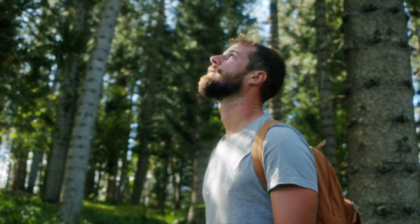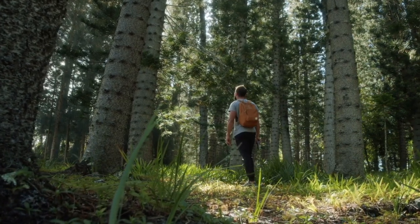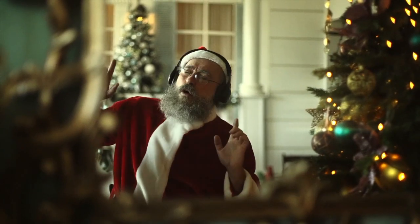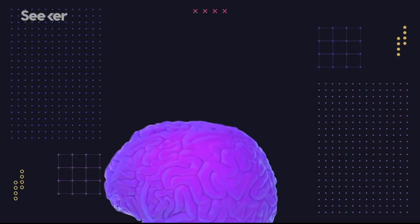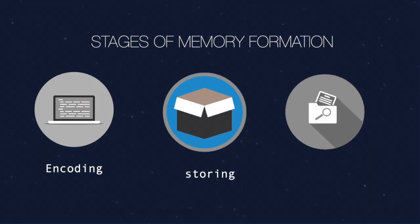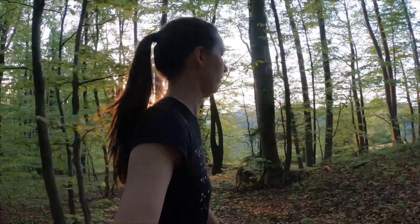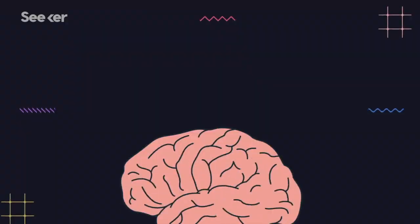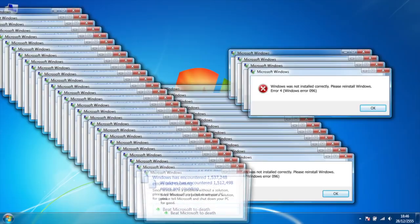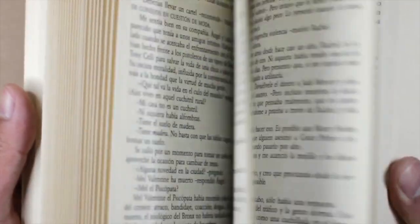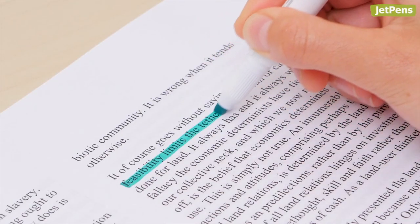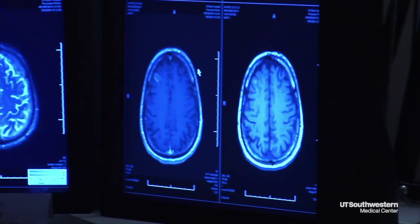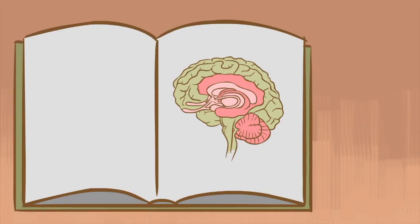Memories consist of recollections of our personal experiences and begin with the senses, since that's how we experience the world. Your memories consist of things you've sensed in the form of touch, taste, sound, sights, and smell. As you experience the world, your brain decides which information needs to be saved. If you remembered everything you sensed every moment of the day, your brain would soon be so overloaded that you wouldn't be able to function. So instead, your brain picks and chooses what's important.